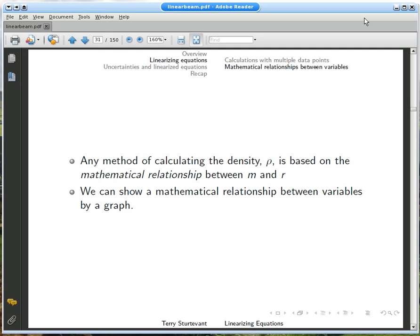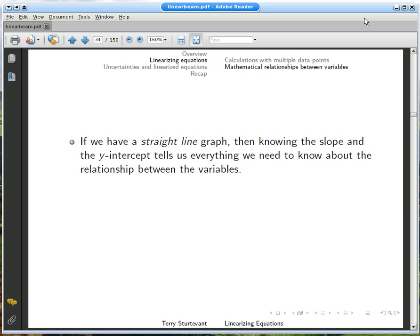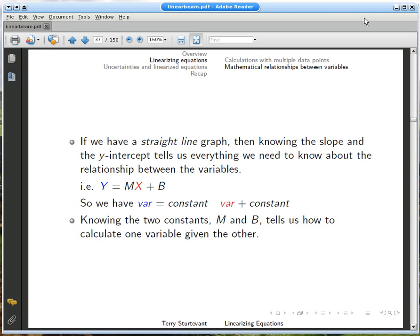Density is given by the mathematical relationship between mass and radius. A graph is a way of showing a mathematical relationship. The graph of mass versus radius isn't linear. On a straight-line graph, if we know the slope and the y-intercept, and their uncertainties, we know everything important about the relationship between the variables.